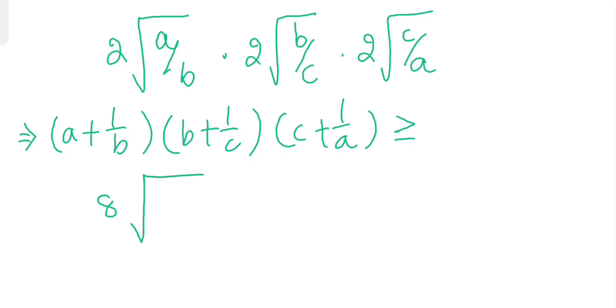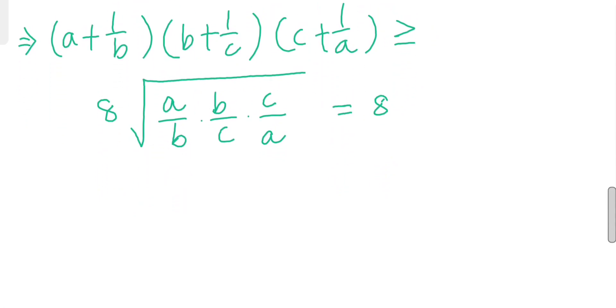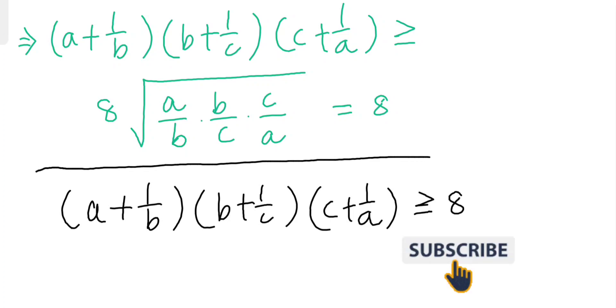8 square root of a by b into b by c into c by a, which is equals to 1. Finally it's proved. So now I can say that a plus 1 by b into b plus 1 by c into c plus 1 by a is always greater than or equals to 8.